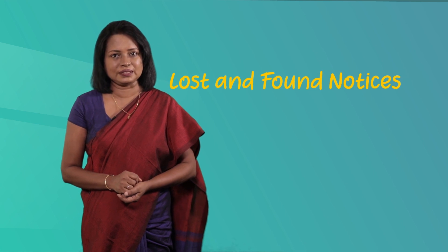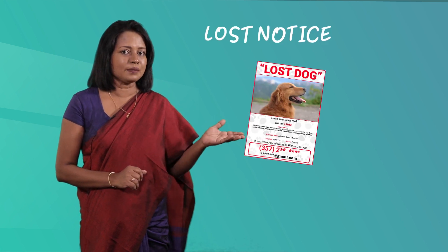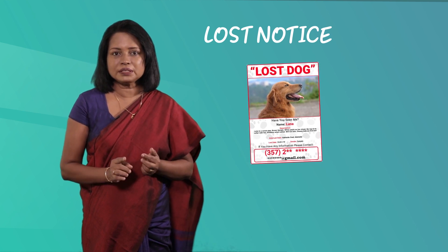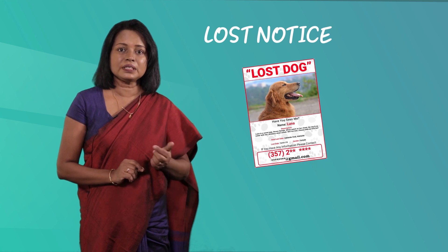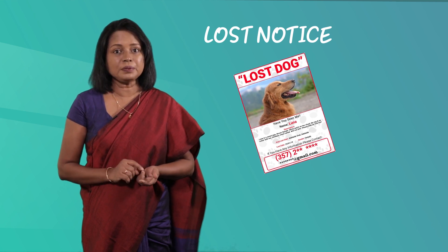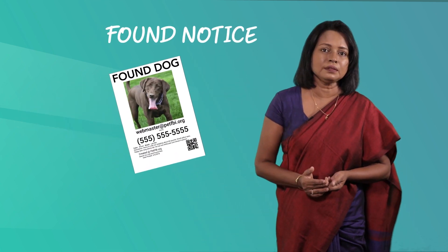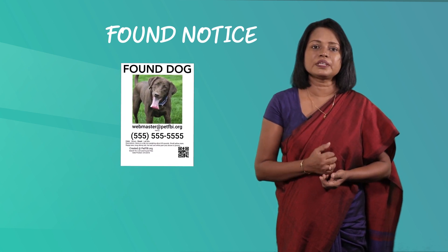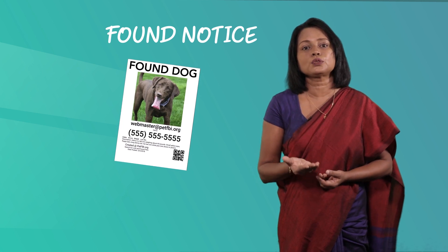The simple texts we are going to read today are notices — specifically lost and found notices. Now children, do you know what lost and found notices are? If you lose something, you can display a notice giving information about the lost item, and you have a chance of finding it. It can be a lost object, animal or even a person. When you find something, you can also display a found notice, which gives you a chance of finding the owner and handing over the object to them.